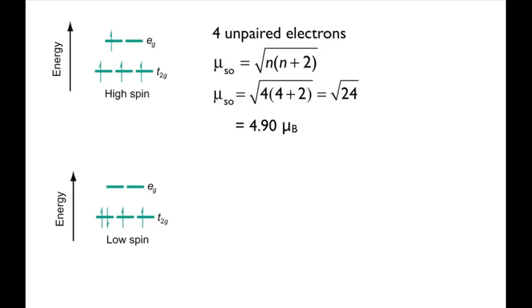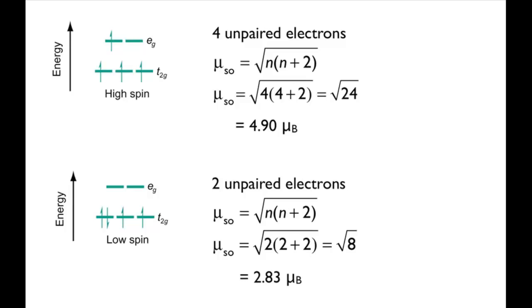A low-spin d4 complex has two unpaired electrons. Putting two into the spin-only formula we get a value for the spin-only magnetic moment of root 8 or 2.83 Bohr magnetons.